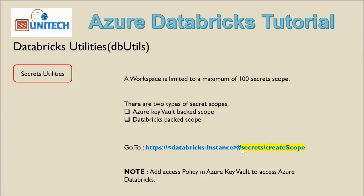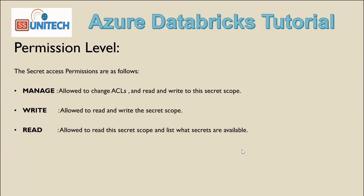We can also add access policies inside the Azure Key Vault for accessing Azure Databricks. There are three permission levels: manage, write, and read. Manage allows changing the ACL (access control list) and also includes read and write access. Write provides read and write access. Read allows only reading the available secret scope.